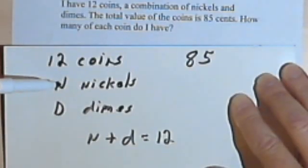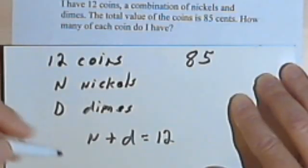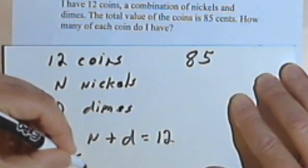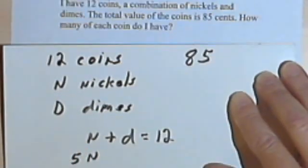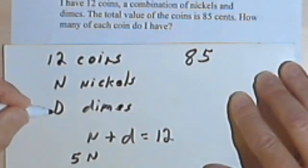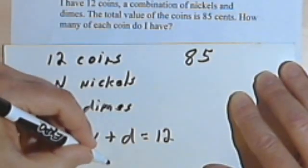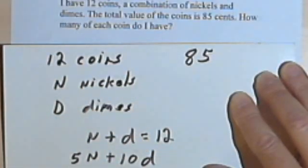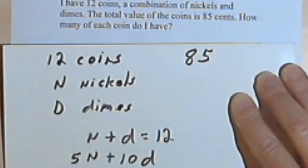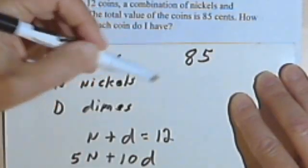So however many nickels I have, if I multiply that number by 5, I'll get the amount of money that the nickels are worth. So in other words, all of the nickels are going to be worth 5 for 5 cents times the number of nickels. And the dimes are worth 10 cents, so all of the dimes will be worth 10 times D since dimes are 10 cents. And all together, I know I have 85 cents.